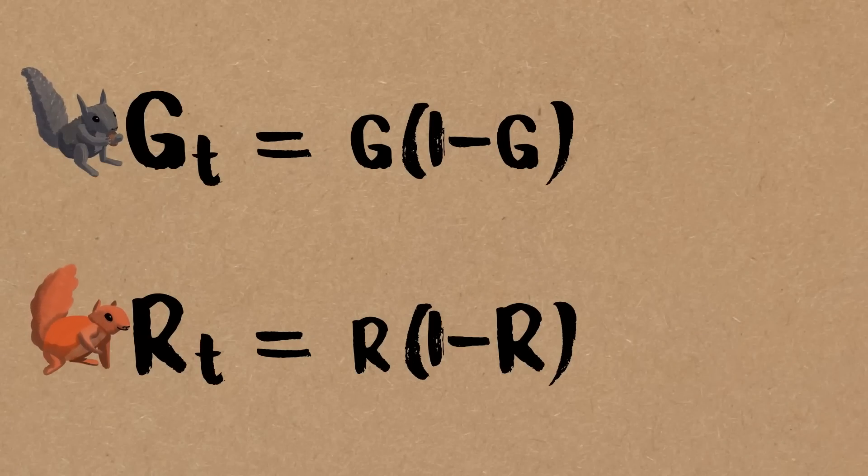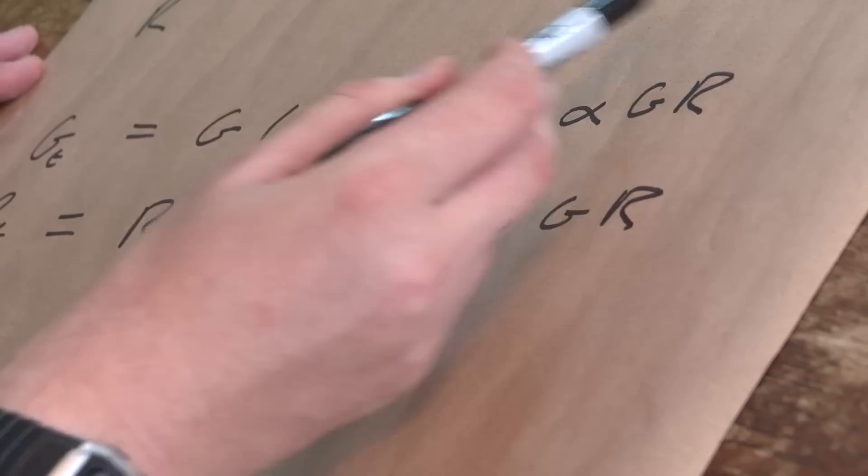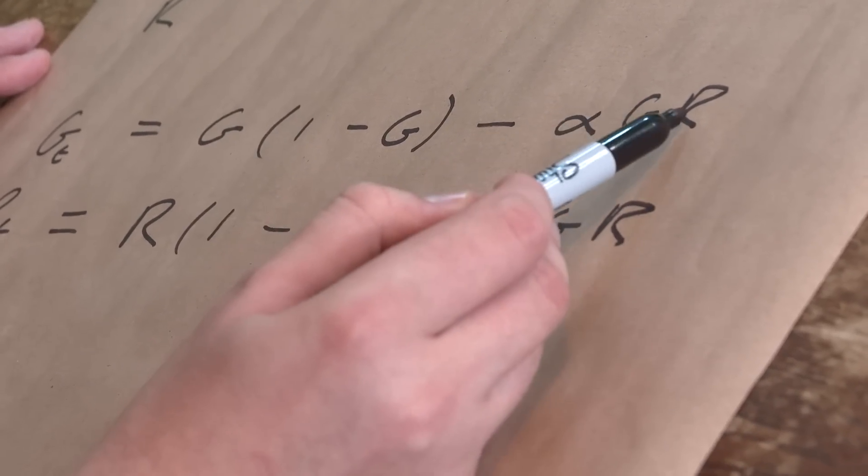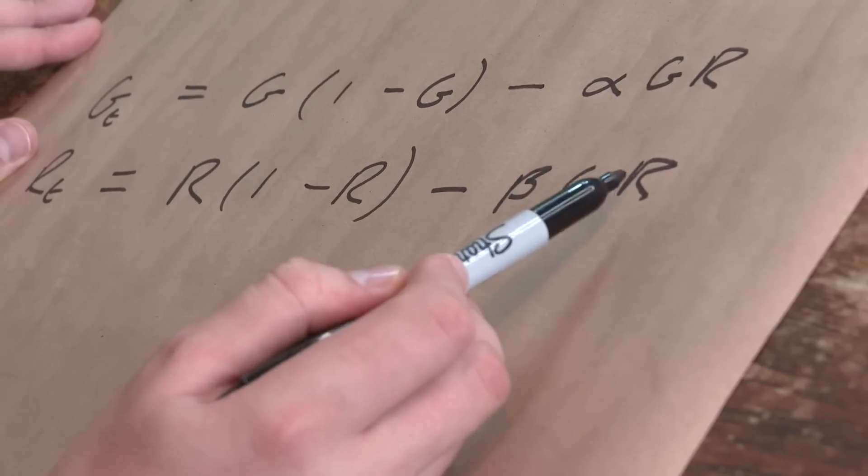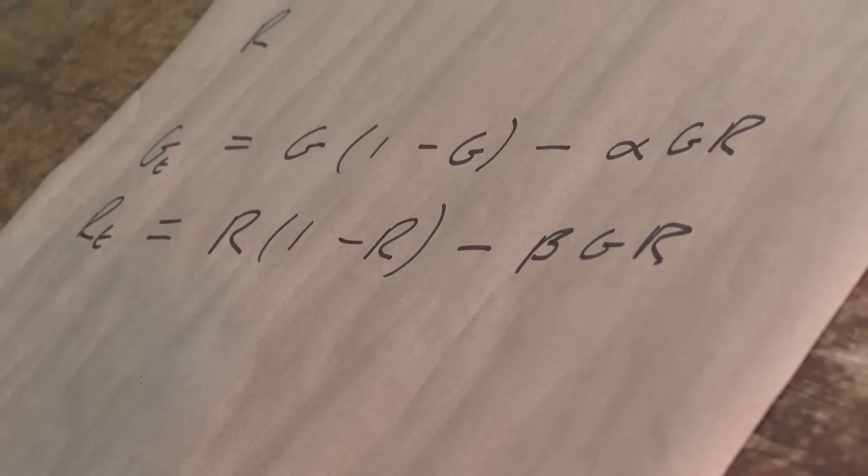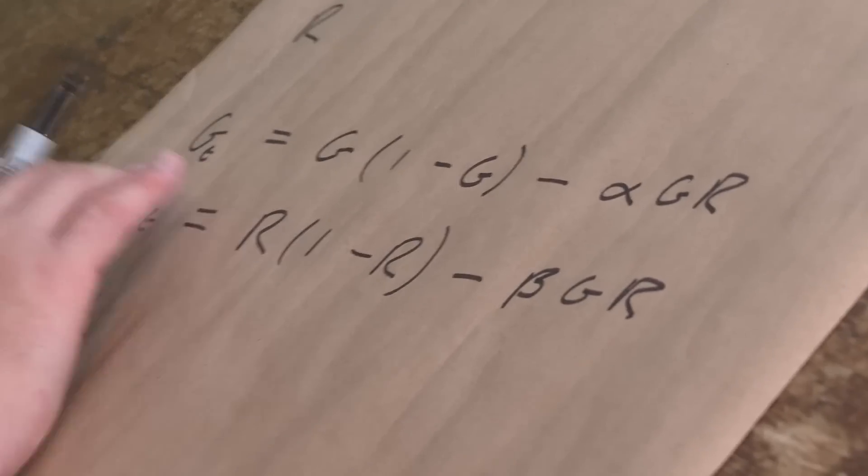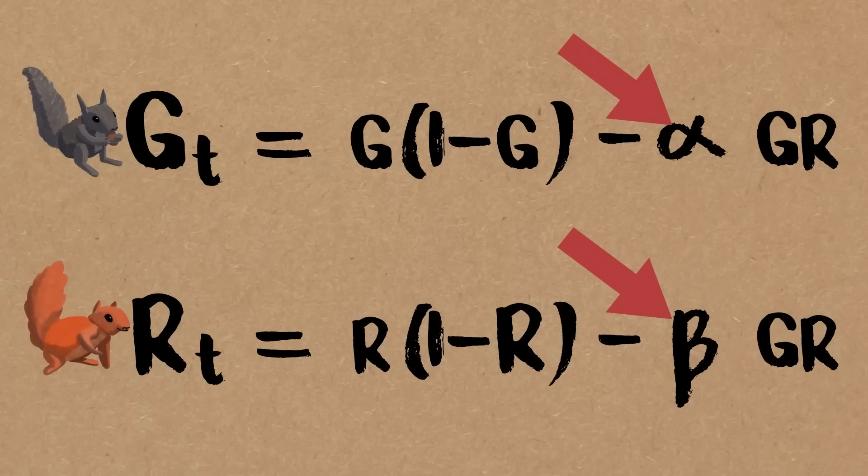So all this says is that the population of squirrels grows proportional to how many squirrels there are, but if there are too many squirrels they compete. And that could be for resources, partners, homes, nuts, it can be for anything. But there's some competition keeping their population finite.